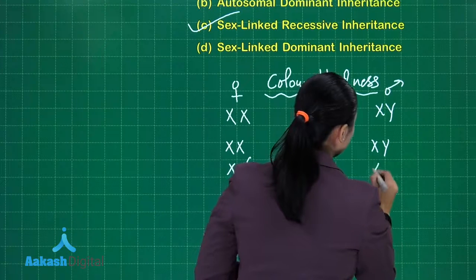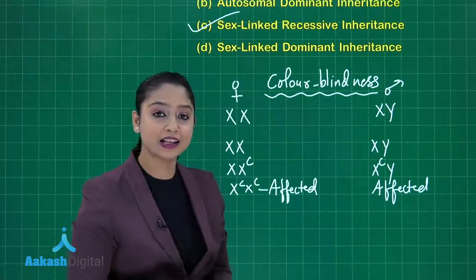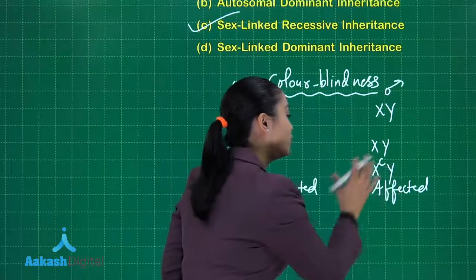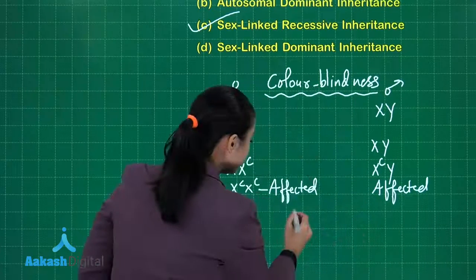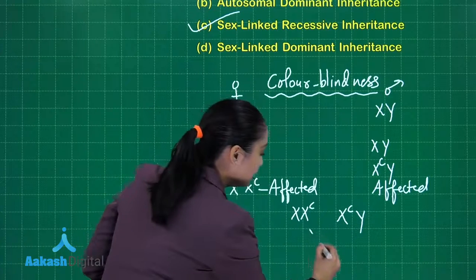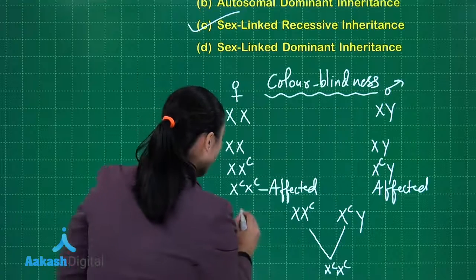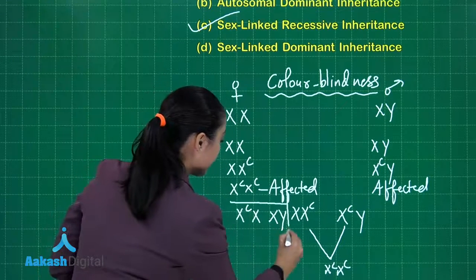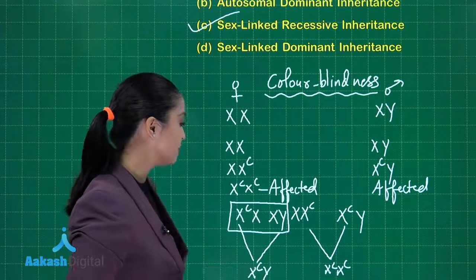This XY is the normal male and this X*Y is the affected male. Males have higher chances of being affected compared to females, because females need both chromosomes to carry the faulty gene whereas males need only one. The inheritance pattern: if the mother is a carrier and the father is normal, a carrier mother can still produce an affected male child.